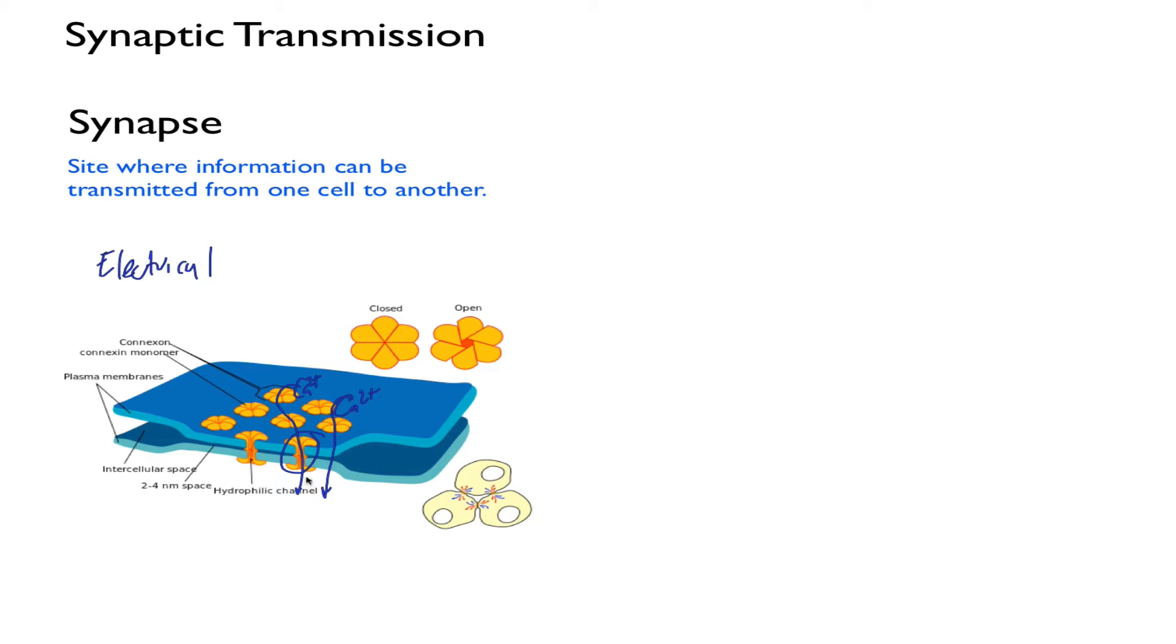So there's direct transfer of ions, direct transfer of current between the cells. And you can see that here. Some cell types signal this way, such as cardiac and smooth muscle cells. But for the purpose of the MCAT, just know that electrical synapses are one of the types of synapses and that they signal directly between cells.